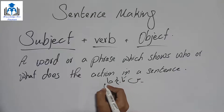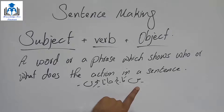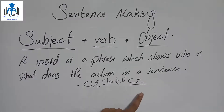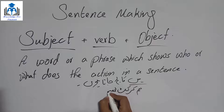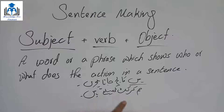For example: 'میں کالج جاتا ہوں' (I go to college). This is a sentence. Now who does this action? Who goes to college? I go — so 'میں' (I) is the subject here. Same like that: 'ہم cricket کھیلتے ہیں' (We play cricket). Who does this? We do — so 'ہم' (we) is the subject.